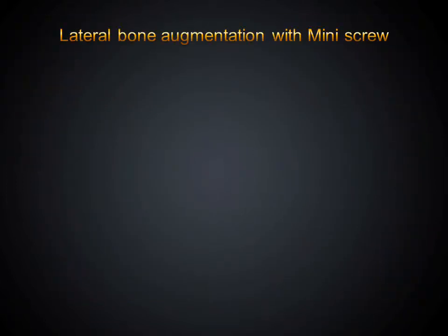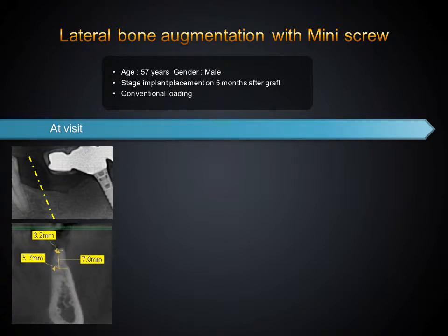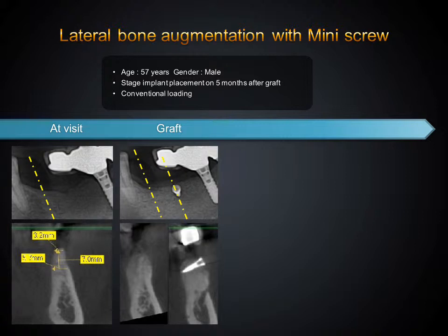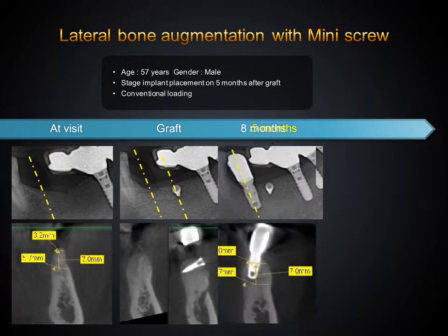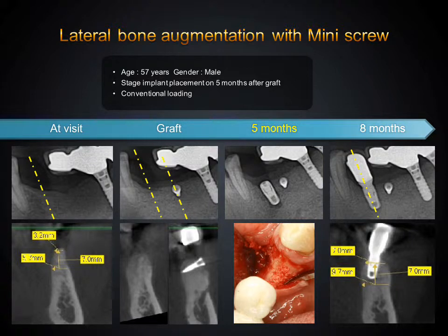To evaluate the effect of RHBMP2 on bone regeneration using titanium tenting screws with HA-TCP particles saturated with RHBMP2, lateral bone grafting was performed in mandibular premolars. One tenting screw was placed on the lateral wall of the second premolar and bone particles were filled on the lateral surface from canine to first molar. At 5 months after surgery, the width of the first premolar ridge increased from 3.2 mm pre-operatively to 7.0 mm post-operatively at the ridge crest level, and from 5.7 mm to 9.7 mm at 7 mm below the crest. Titanium tenting screws with RHBMP2-saturated HA-TCP particles represent a successful protocol for lateral bone augmentation.